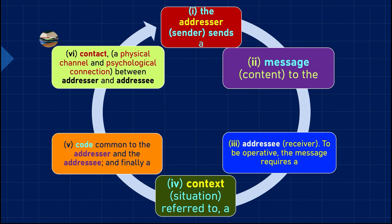Finally, the sixth point is contact — a physical channel and psychological connection between the addresser and the addressee. Contact means a physical channel. Sometimes I may talk to you sitting in front of you — that is our physical channel. The mode of contact could be many things: talking in person, or using a mobile phone as a channel.